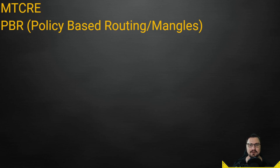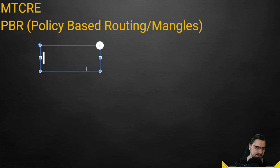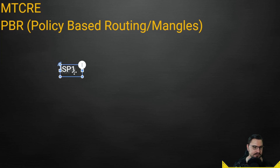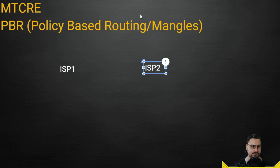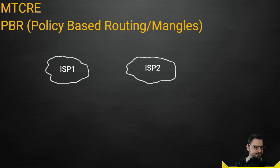Let's talk about policy-based routing, or in MikroTik terminology, mangle rules. I'll paint a quick example: ISP1 and ISP2 are both delivering internet services to us — two ISPs with a little cloud around them representing the internet. Typically you'd deliver this on a single router with uplinks to both ISPs.